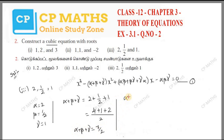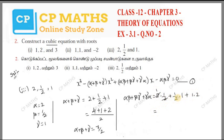Now alpha beta plus beta gamma plus gamma alpha: 2 into 1/2 plus 1/2 into 1 plus 1 into 2, which gives 1 plus 1/2 plus 2, so the answer is 7/2.